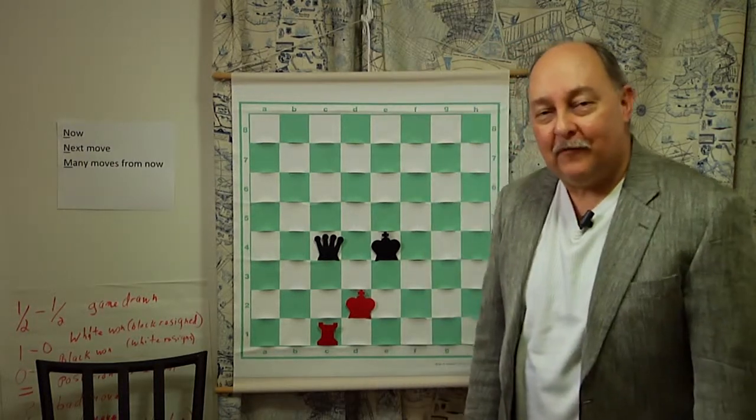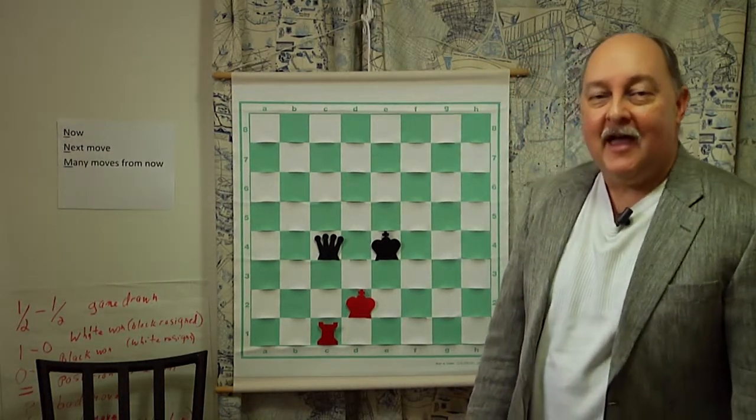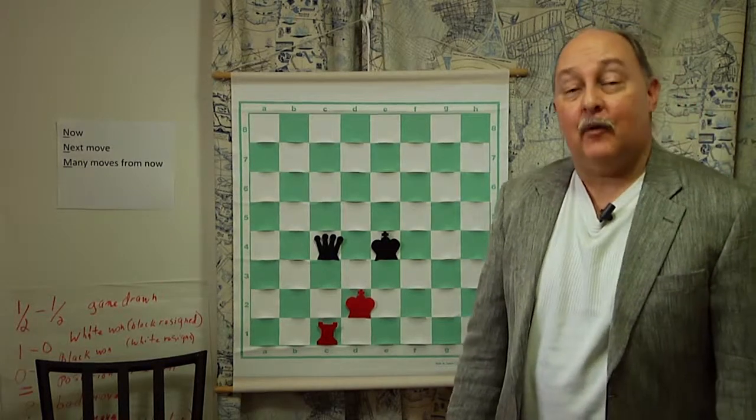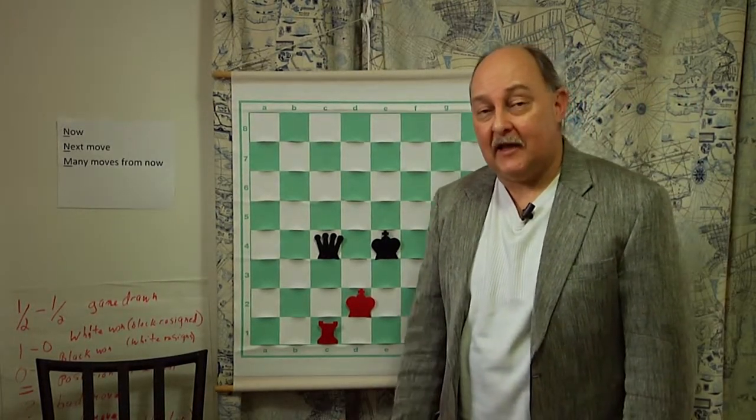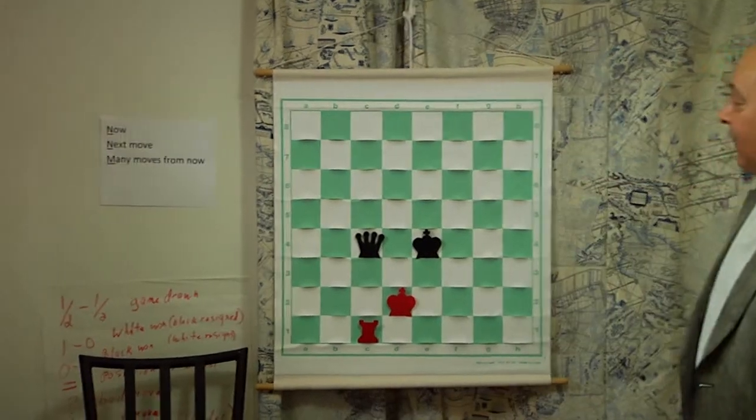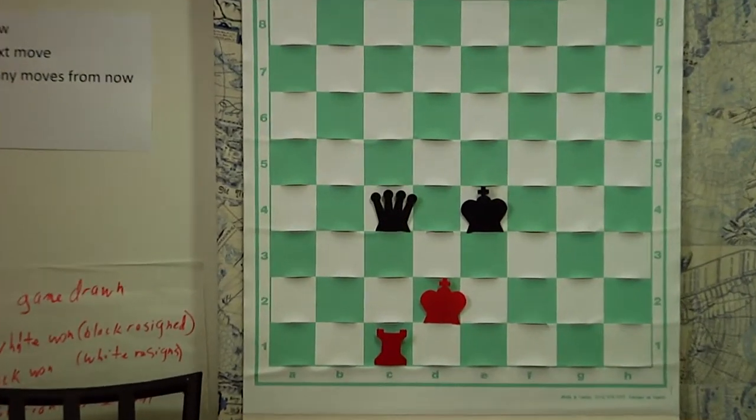Hello and welcome to segment number four from Snow's Chess Academy in our chess lessons. Today we're going to focus on check, checkmate, and the five ways a game can end in a draw. Take a look at the board here. We're going to focus on what check is.